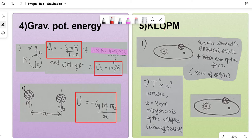Next is Kepler's Laws of Planetary Motion. The first is the Law of Orbit: planets revolve around the sun in elliptical orbits, with the star located at one of the two foci of the ellipse.